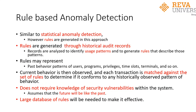In rule-based anomaly detection, it is similar to statistical anomaly detection. However, the important thing here is that rules are generated, whereas in statistical methods, stats are used to measure certain activity. Rules are generated basically through historical audit records — that is, records which are analyzed to identify certain behaviors or usage patterns. Based on those usage patterns, rules are generated which describe the patterns of a user, representing past behavior of users, programs, privileges, terminals, and so on.